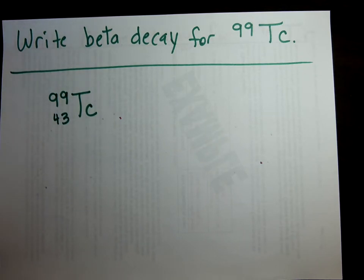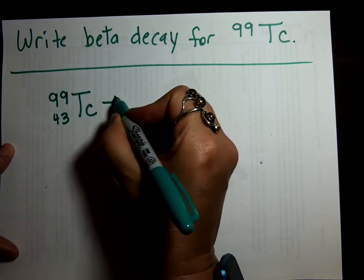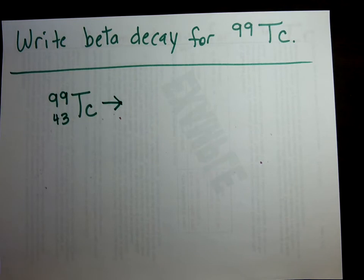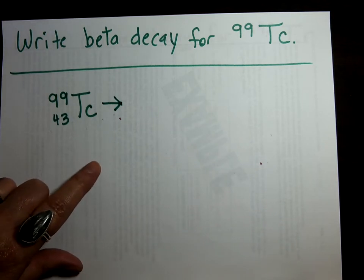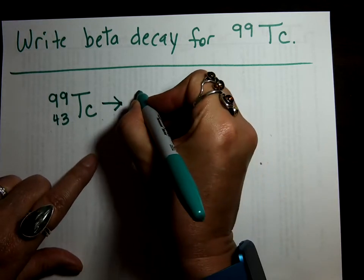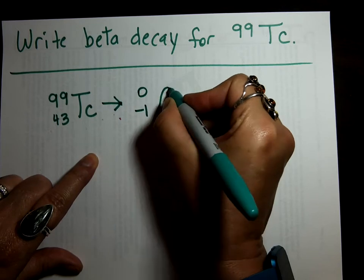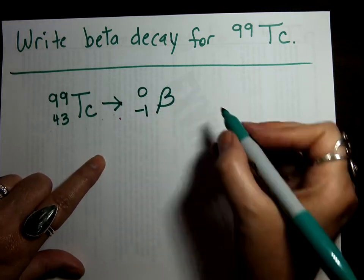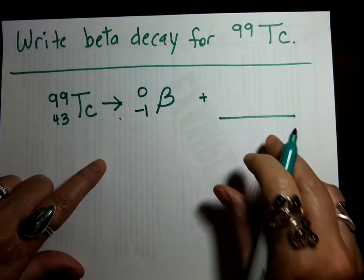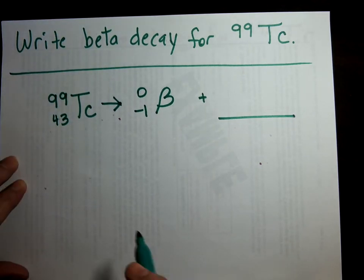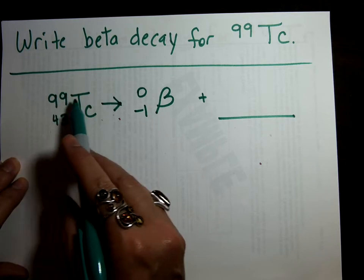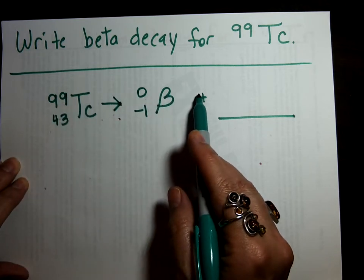What comes next? Hopefully you said the arrow. Yes, the arrow is next. Excellent. Now we need to write a beta particle. Do you remember what a beta particle is? Yeah, 0 minus 1 beta. And now we get to figure out the daughter atom by using the math. 99 equals 0 plus what?